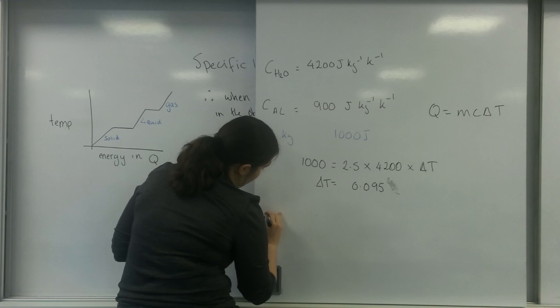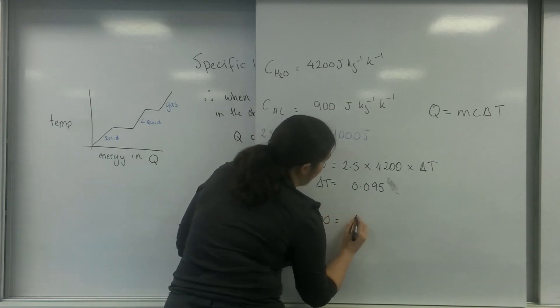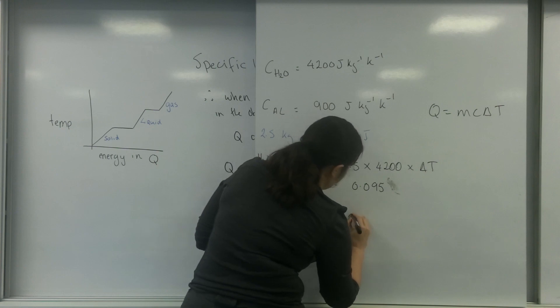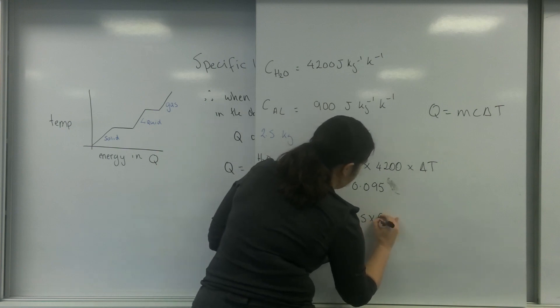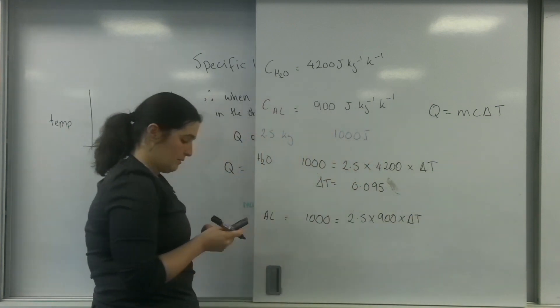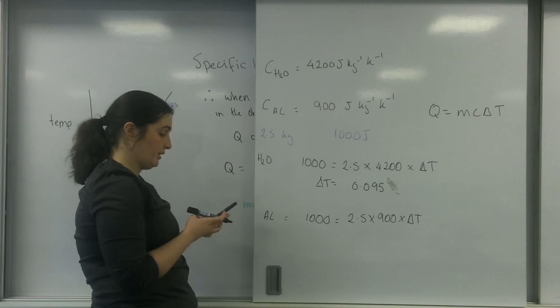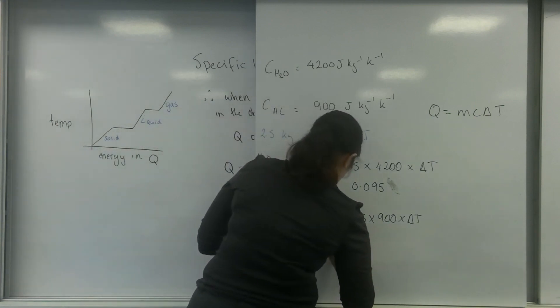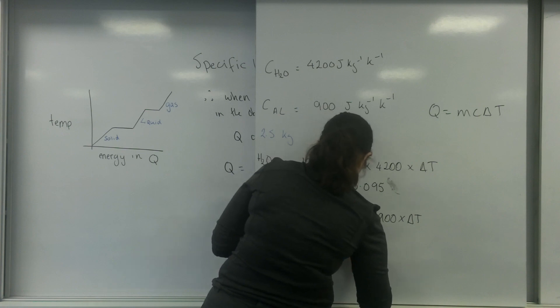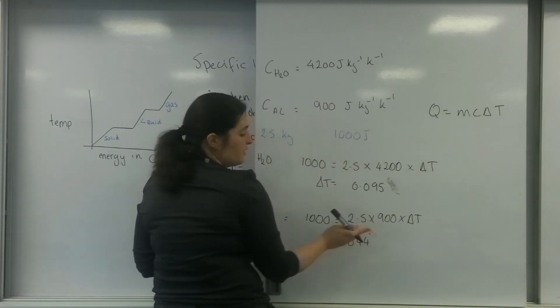If I do it for aluminium, it's a thousand, same amount of energy. The amount of energy is 2.5 times 900 times by delta T, so 1,000 divided by 2.5 divided by 900. I get an answer of delta T equals 0.44 degrees, either degree C or Kelvin.